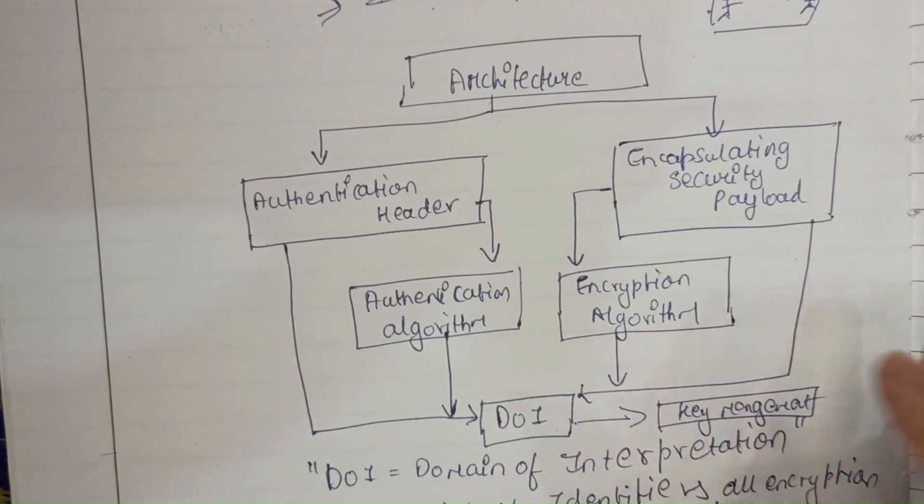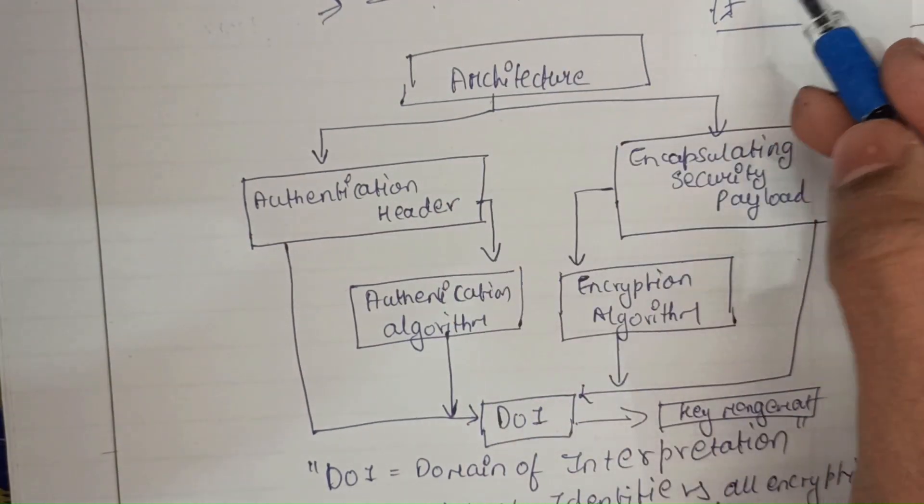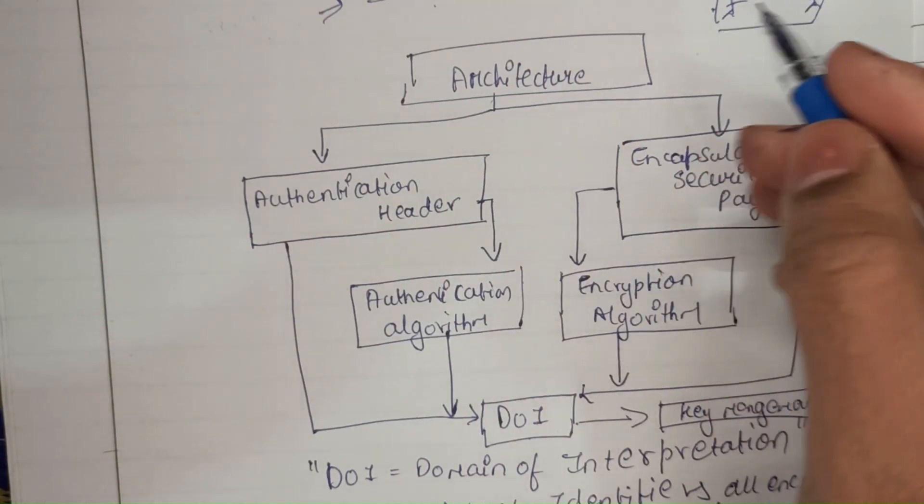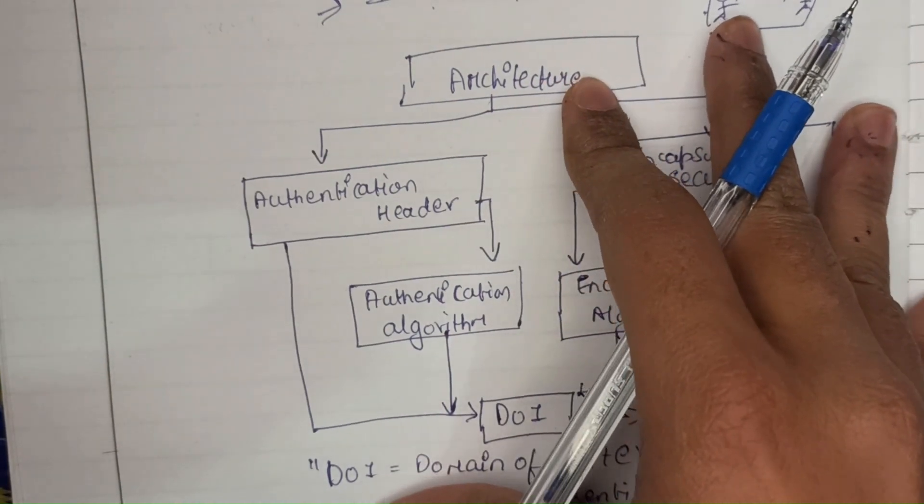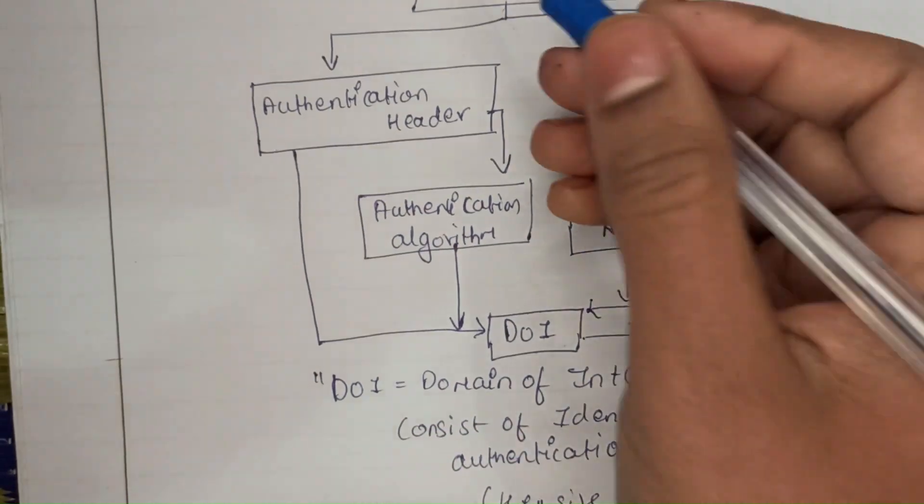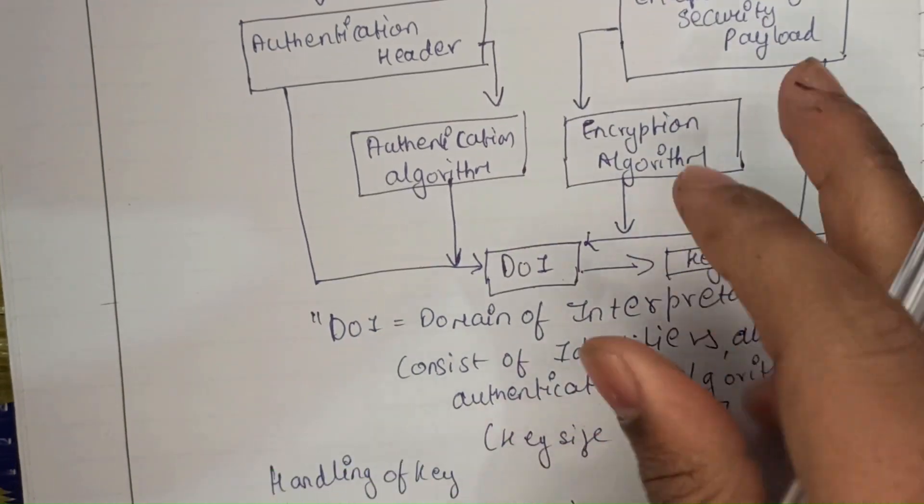When you are communicating with two parties you need to have utmost security. The security, how it provides us the architecture of it, is right over here. So the IP security architecture uses basically two protocols which are very important protocols.